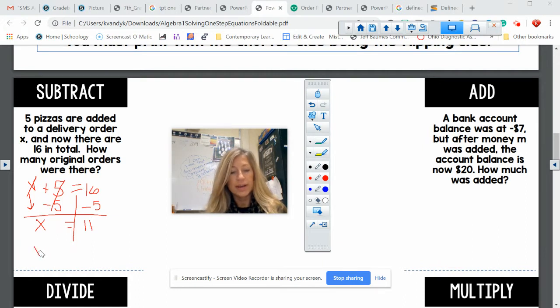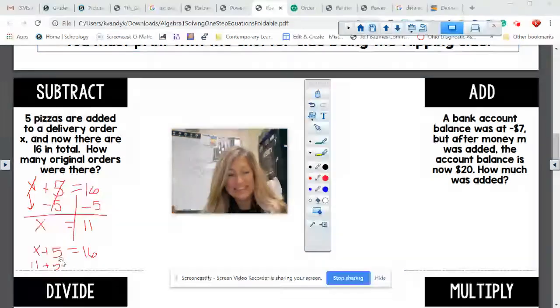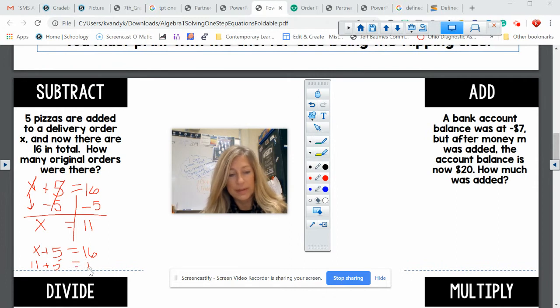So now we do a real quick check. X plus five equals 16. And I substitute in 11 plus five. Hopefully you can write better than me. And that equals 16. Always do this last step. You need to show that both sides are equal. And the reason you need to show that is because next year in eighth grade, sometimes we'll have two sides that are not equal. So you need to show that. You need to prove it to us.